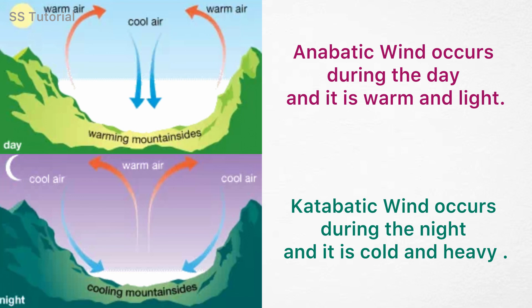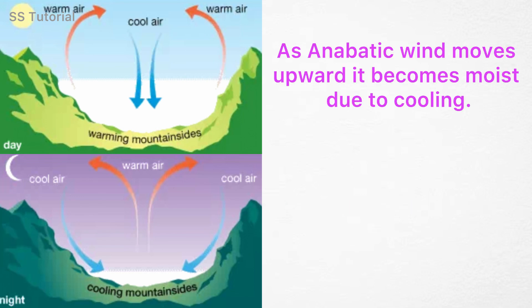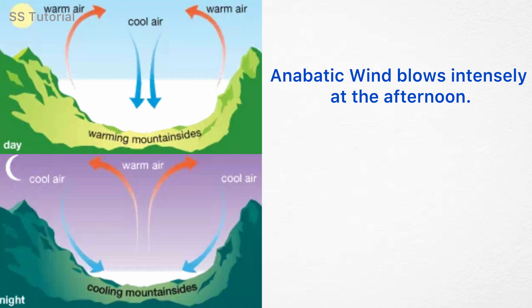As anabatic wind moves upward, it becomes moist due to cooling. And as katabatic wind moves downward, it becomes dry. Anabatic wind blows intensely in the afternoon, whereas katabatic wind blows intensely before sunrise.